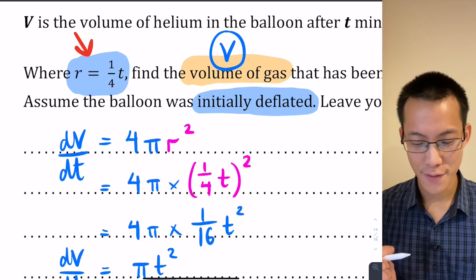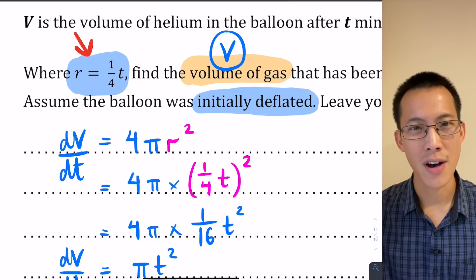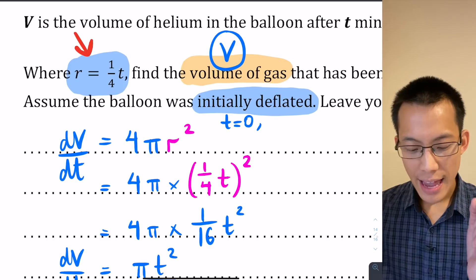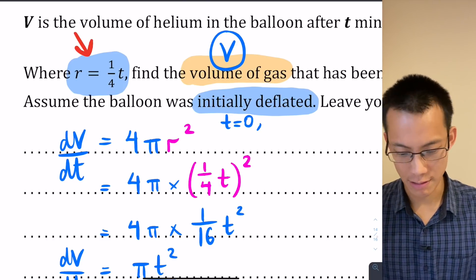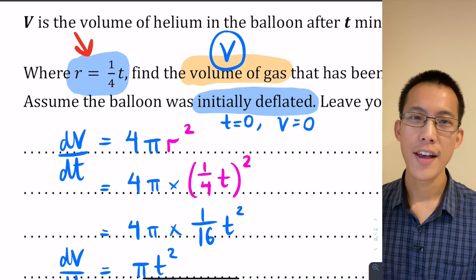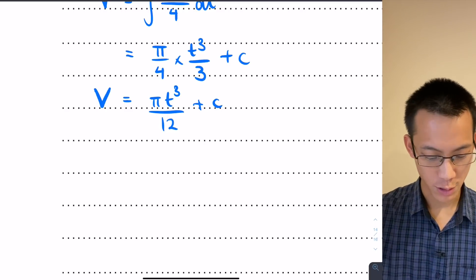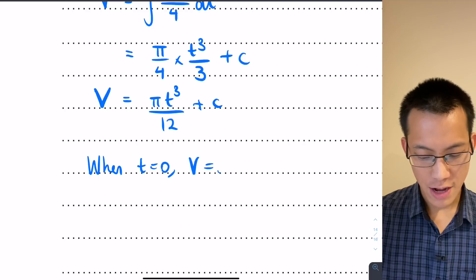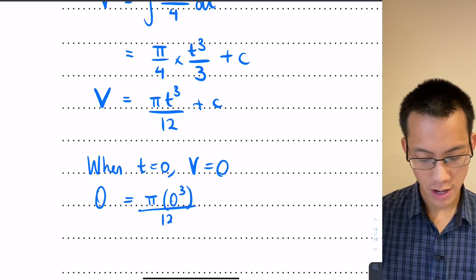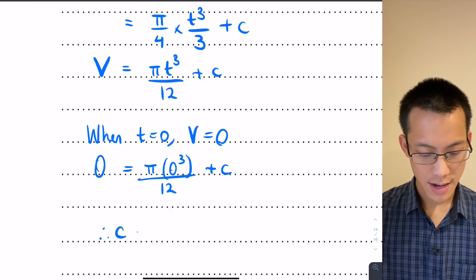There's an equation hiding, actually a pair of equations hiding in that sentence, but you've got to be able to interpret and see through the language. Initially is a statement about time, at the beginning. That's a statement of t equals zero. If the balloon is deflated, that's a statement about volume. How much helium is in there? The answer is there's no helium in there. V is also equal to zero if the balloon is initially deflated. So I can use t equals zero and v equals zero to evaluate plus c. When t equals zero, v equals zero. I do a straight substitution. I get zero on the left hand side, π times zero cubed all divided by 12, plus c. All of that stuff up here in this fraction is going to become zero. So therefore, c is also equal to zero.